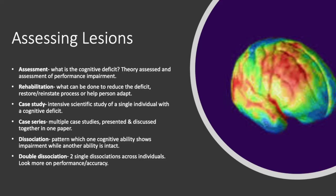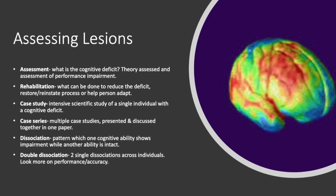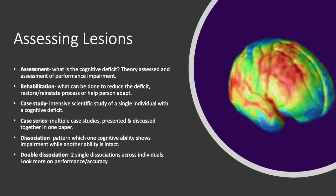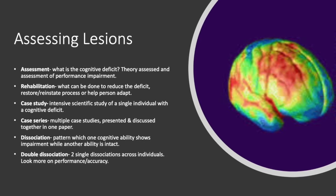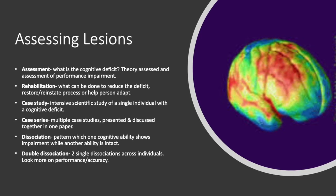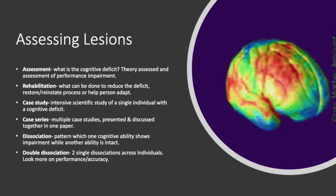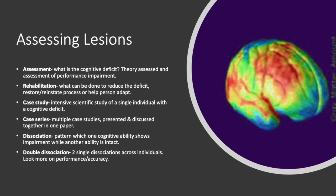In assessing for cognitive neuropsychology, one must consider what the cognitive deficit is. The researcher or neuropsychologist must also consider theories on assessment of the alleged impairment in performance of that cognitive area. Rehabilitation is the goal of all neuropsychologists and includes what can be done to reduce the deficit, restore or reinstate processes, or help the person adapt to the loss of ability.